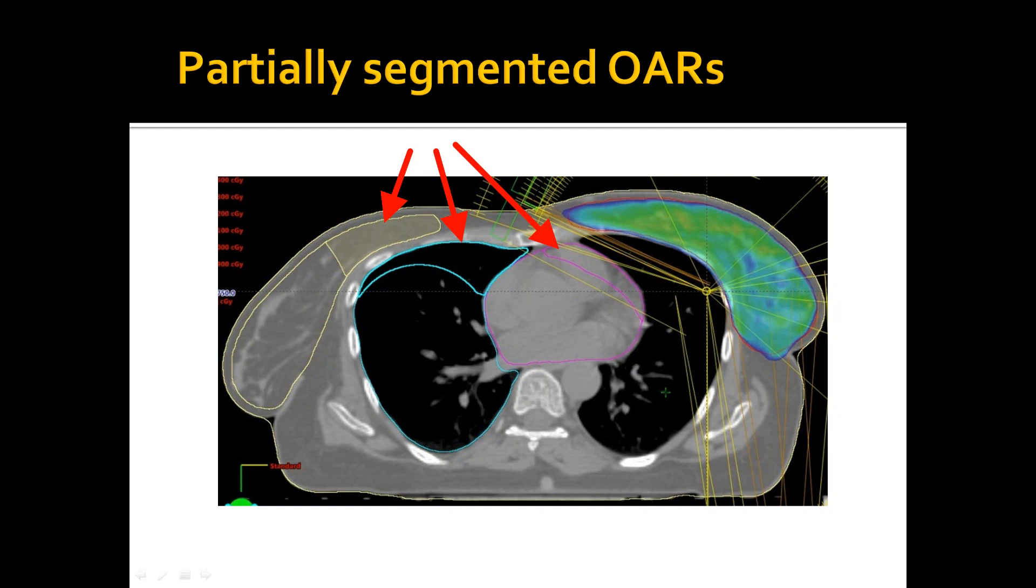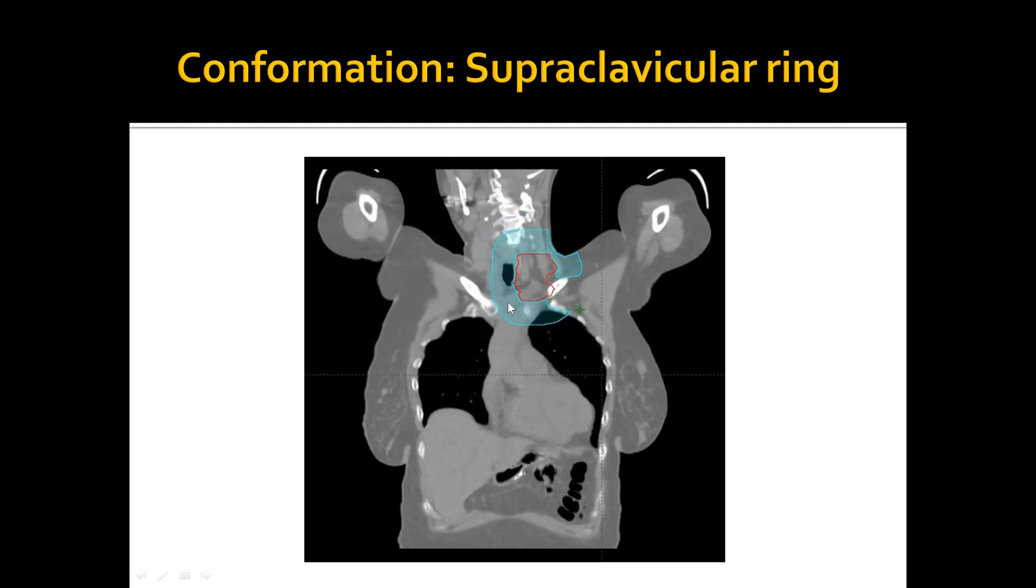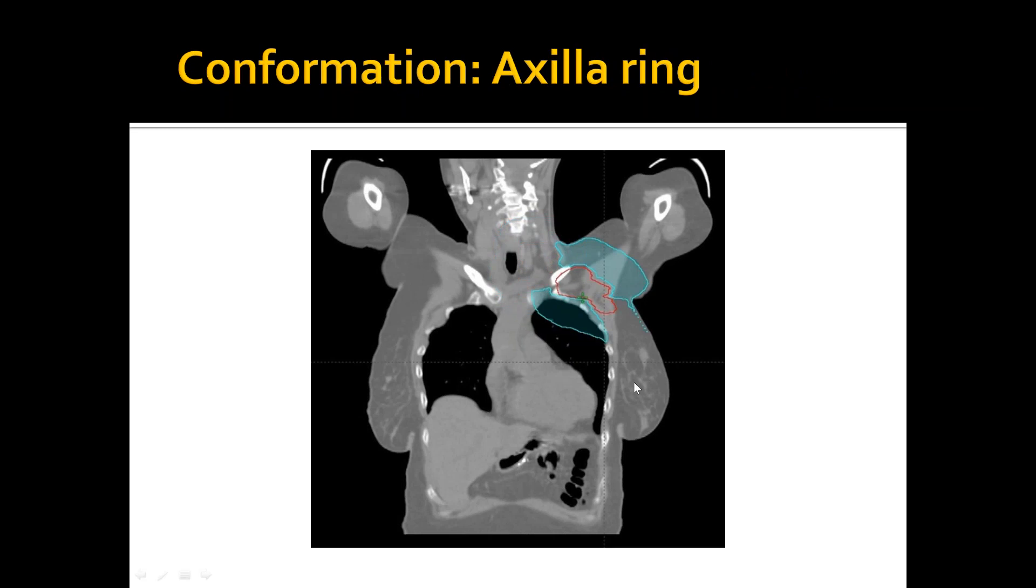For conformation, I used an overall global ring. It has 2 mm separation from the target or from the overall target. I also used specialized rings for the supraclav and for the axilla. I did not use a specialized ring for the left breast, because its volume is large enough, and the axilla and supraclav are smaller targets, so I wanted more conformity at those regions.